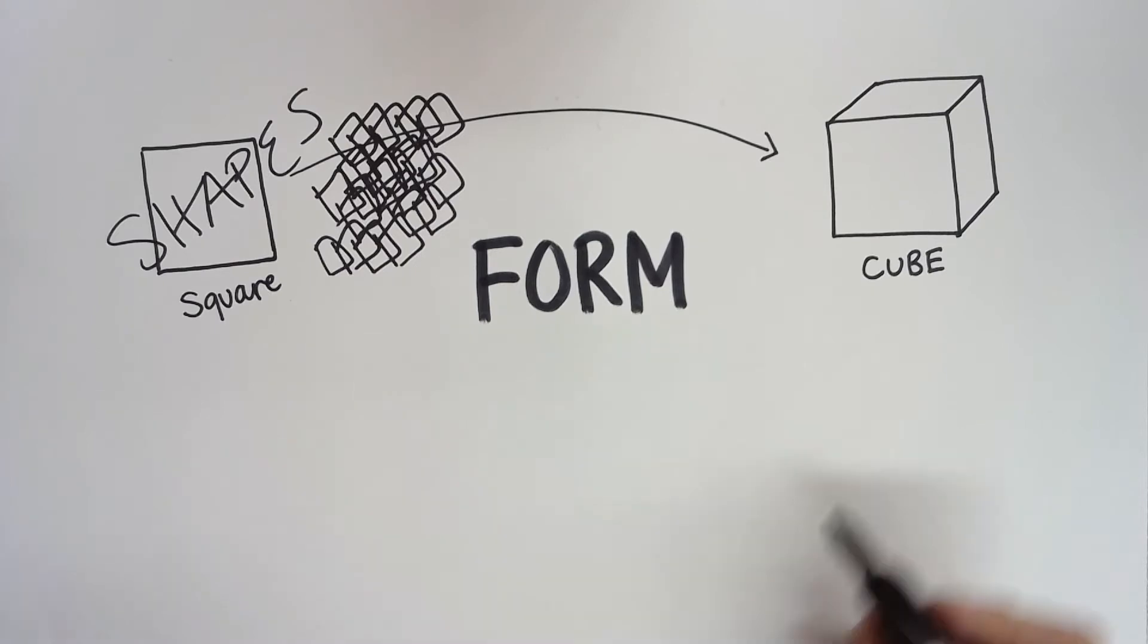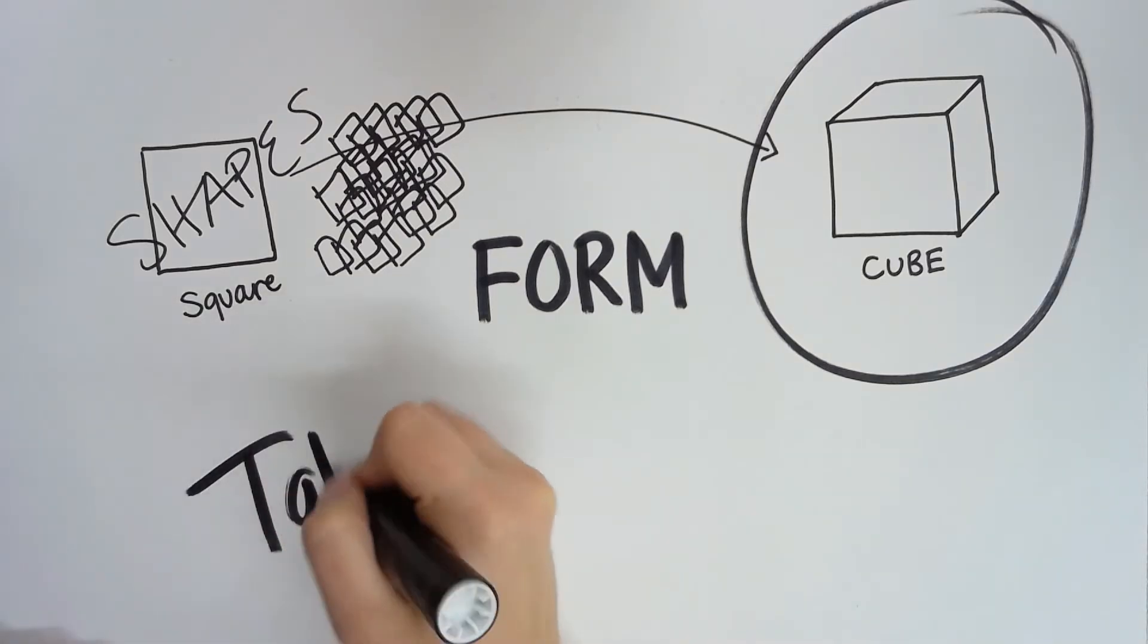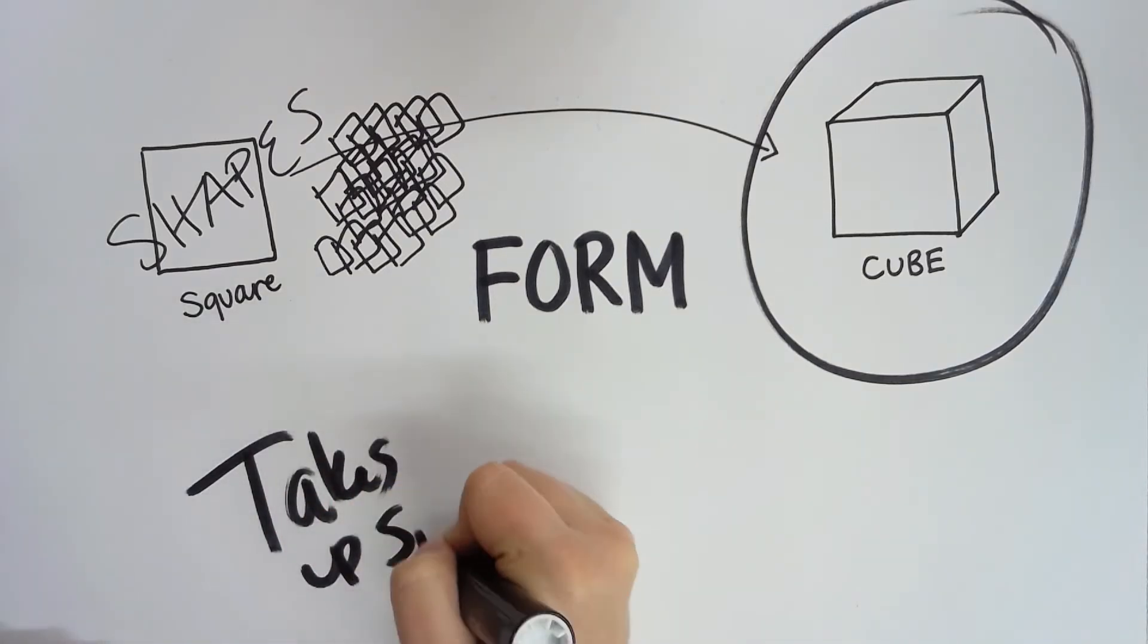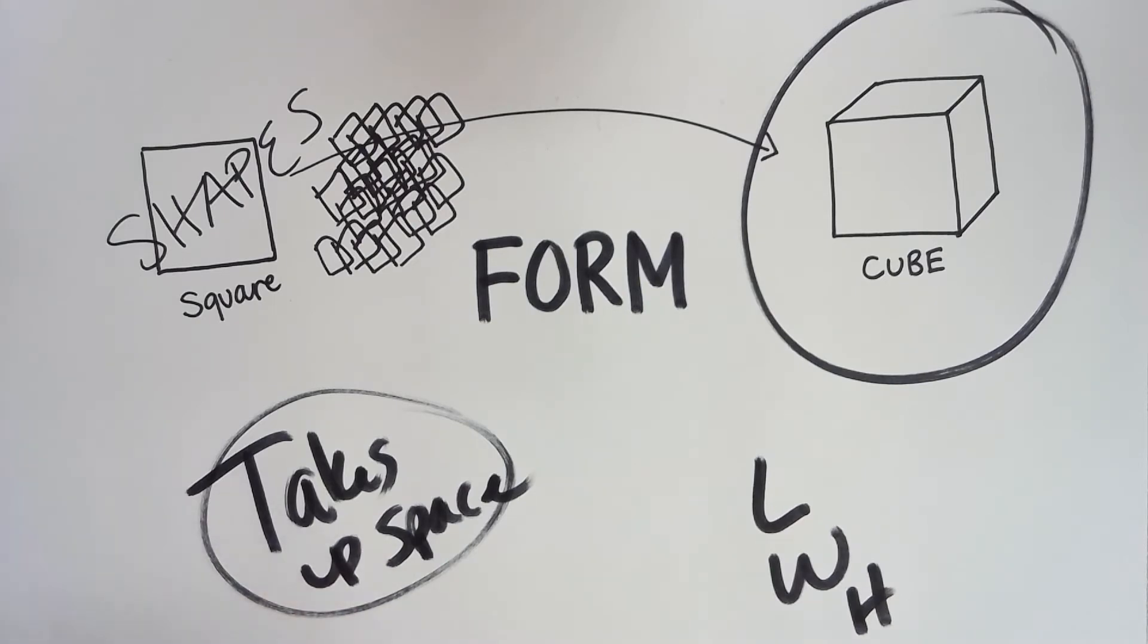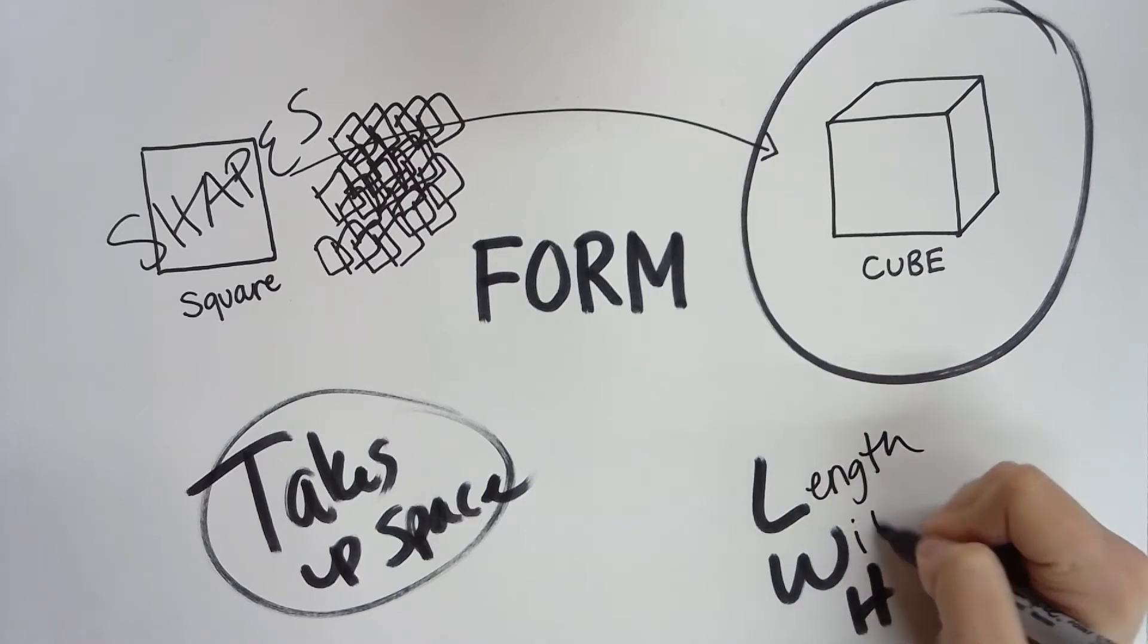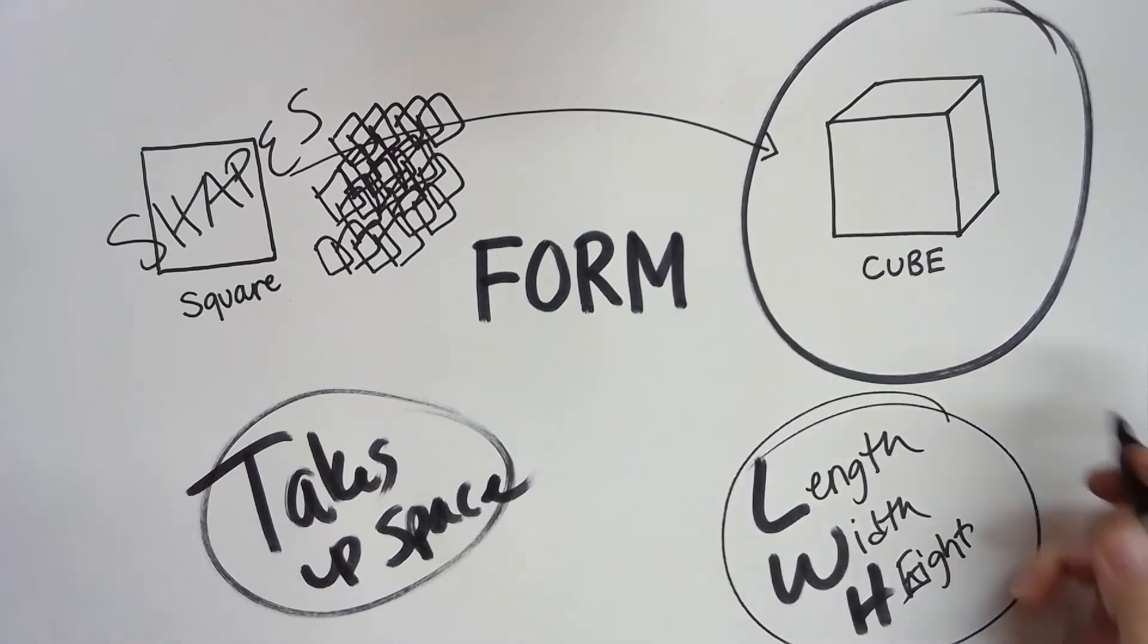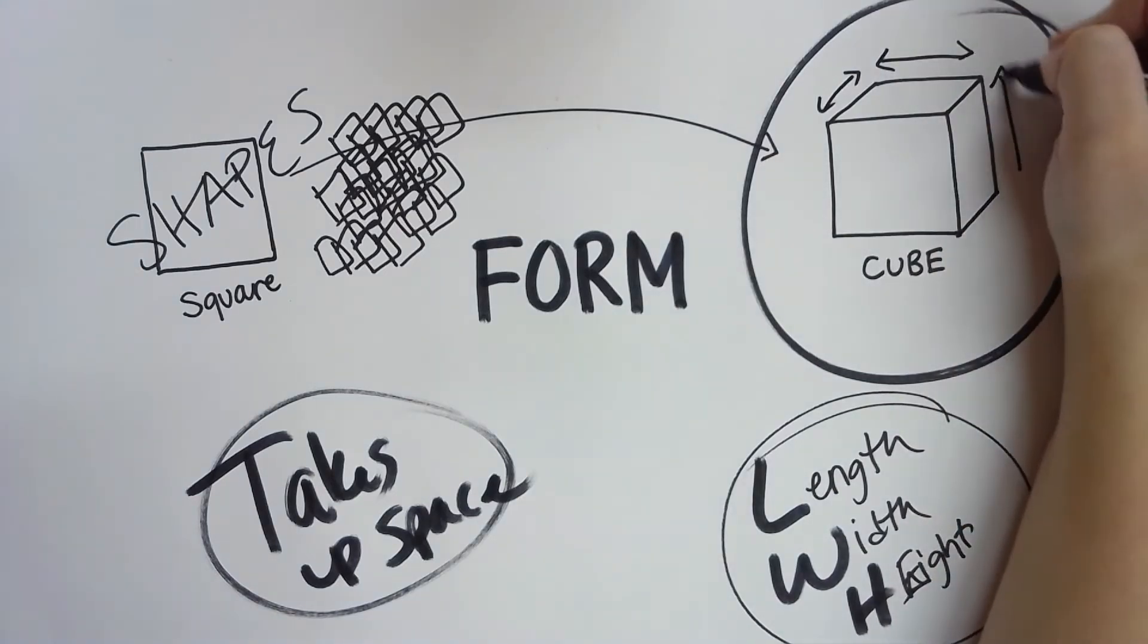And that's the big thing with form. It is when you have something that takes up space. It has length, it has width, and it has height. Those are some of the big things when you talk about form. Dimension one, dimension two, dimension three.